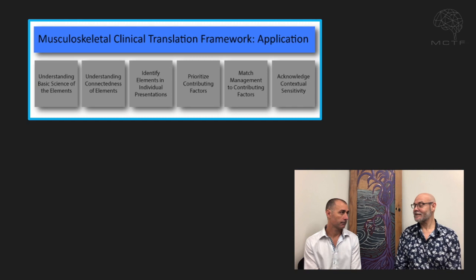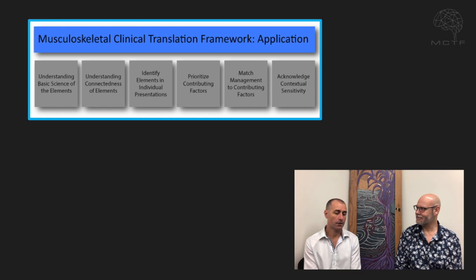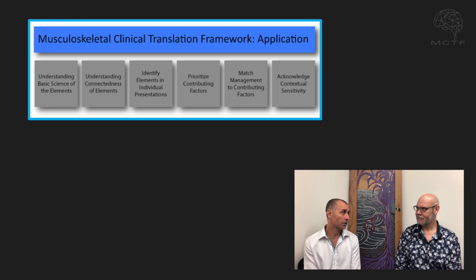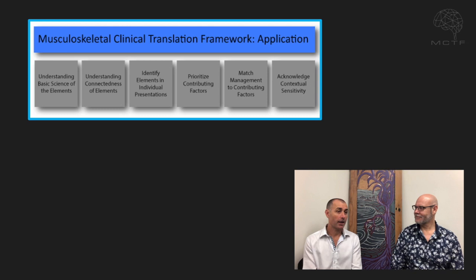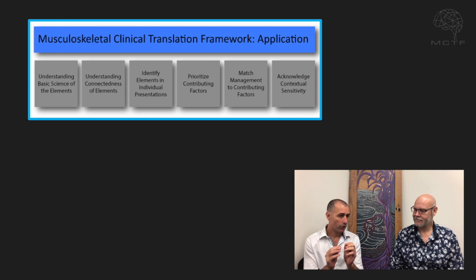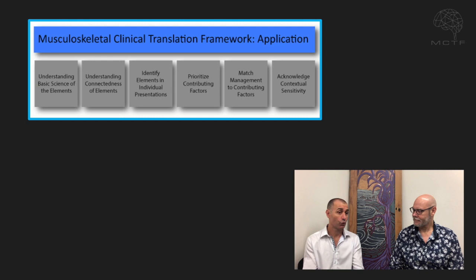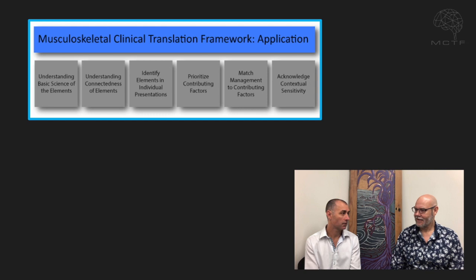The next application is around prioritising contributing factors as part of the diagnosis and then into management. These things are relevant, but the priority directs your management — the big ticket items that are most important should be reflected in your management. Working with the patient to judge the dominant factors is key. In my experience, I've made errors where I've identified factors in a presentation and put a big focus on, say, posture or muscle flexibility, done a heap of work on that over six weeks, and they're no better. On reflection, that might have been a factor, but not necessarily the main driver for that person.